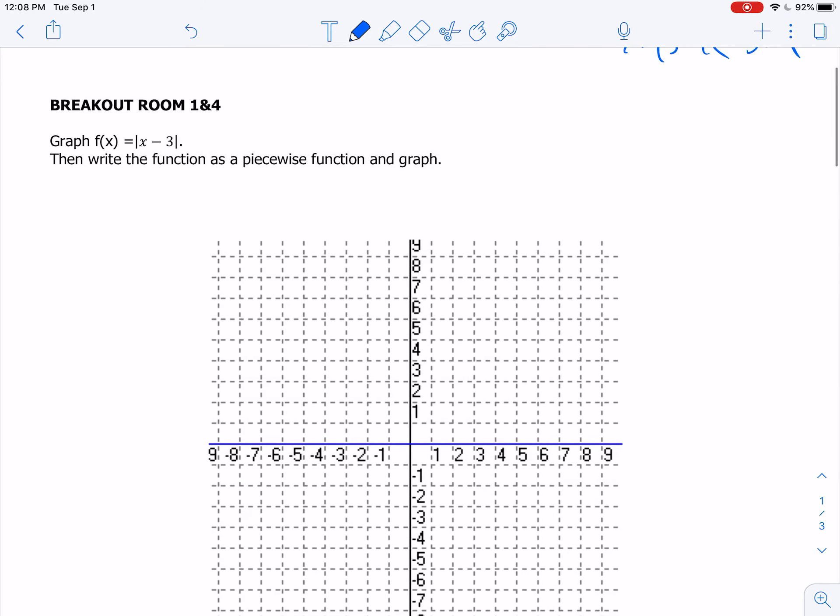So the first thing I see on this one is that it's an absolute value function and it's been shifted to the right 3. So I know that I'm going to sit on the x-axis like this, and I've got a slope of positive 1, and I've got a slope of negative 1 over here. That was very meticulous of me, but there you go.